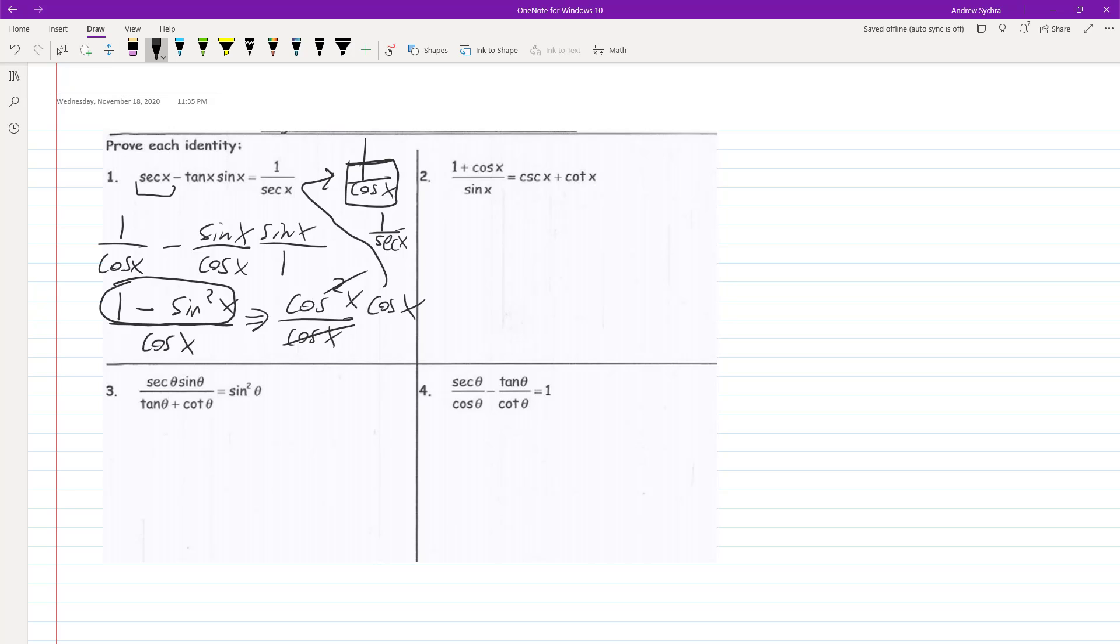Okay. What we'll do here is convert the left to look like the right. So 1 over sine of x plus cosine of x over sine of x. This is actually really easy. So this converts to cosecant of x. And this is the same thing as cotangent of x.